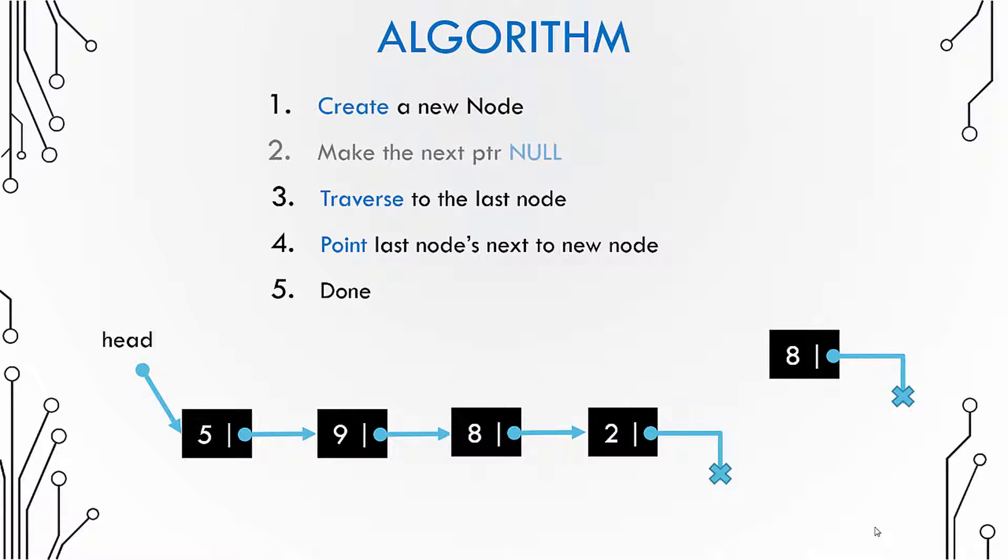Because we are appending this node to the linked list, it would end up as the last node. Hence we make its next pointer as null because there would not be any node after this.